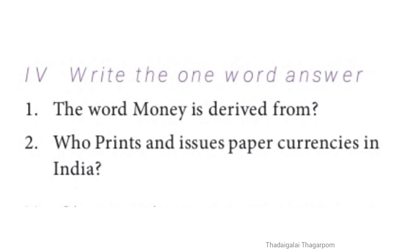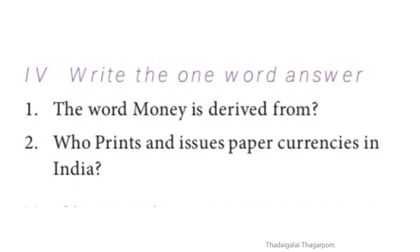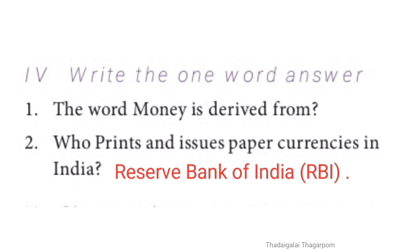Section 4: Write the one word answer. Q1: The word money is derived from what? Answer: Roman word Monita Juno. Q2: Who prints and issues paper currencies in India? Answer: Reserve Bank of India (RBI).